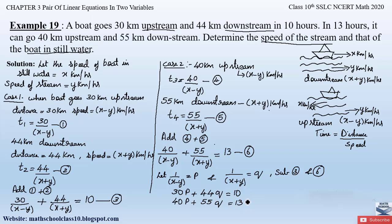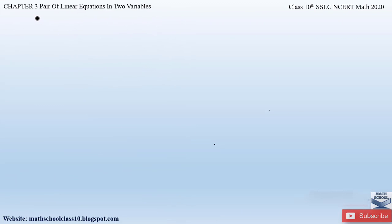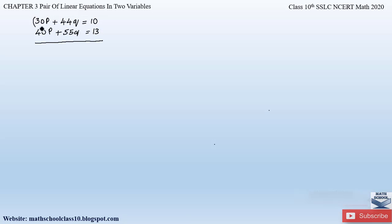Now let us solve this pair of linear equations by the elimination method to find the values of p and q, so we can determine x and y. We have 30p plus 44q equals 10 and 40p plus 55q equals 13. Since neither variable's coefficients are equal, we multiply the first equation by 4 and the second by 3 to make the coefficients of p equal.